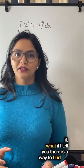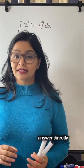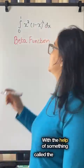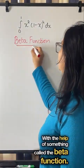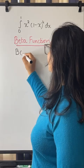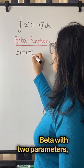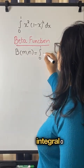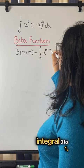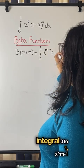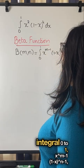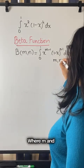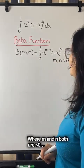What if I tell you there is a way to find the answer directly without calculating much, with the help of something called the beta function. Beta with two parameters m and n is equal to the integral from 0 to 1 of x to the power (m minus 1) times (1 minus x) to the power (n minus 1), where m and n are both greater than 0.